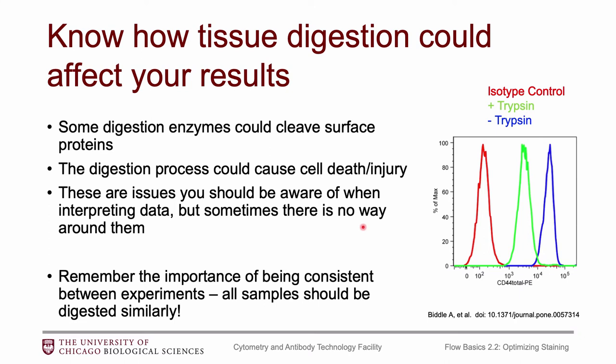There are a couple of factors you should be aware of. Some digestion enzymes could potentially cleave off your surface proteins, so you might be losing expression because of the enzyme you're using. Trypsin is a particularly bad one — you can see that when trypsin is added, CD44 decreases quite significantly on these cells. You may have to switch the enzyme, the concentration, or the time in the enzyme to address this.